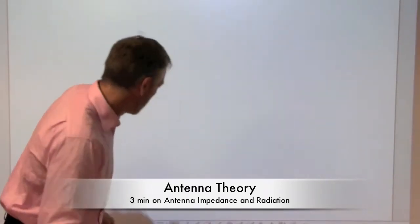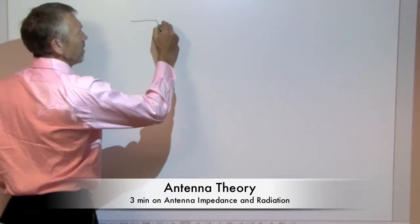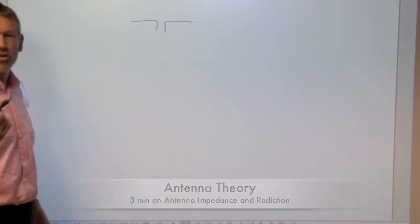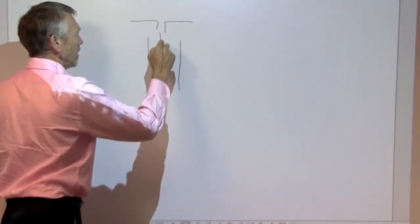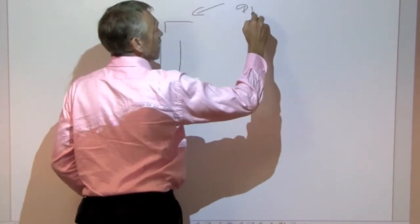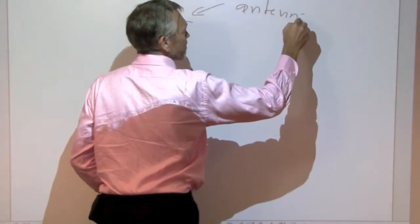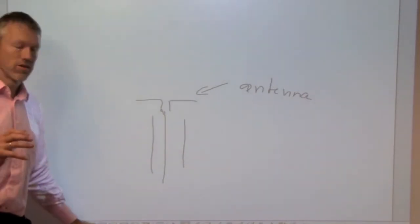Antenna theory, very short, is like an antenna, doesn't matter how it looks like, is always going to be fed by a cable. We have a cable in here and the cable connects to the antenna. Talking about the antenna, you have two parts of the antenna.